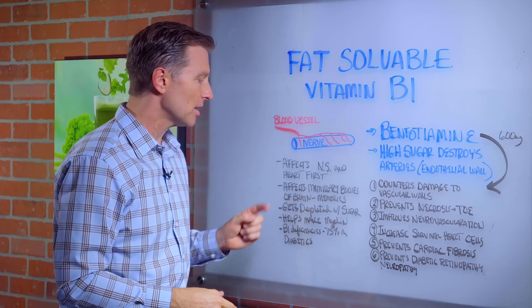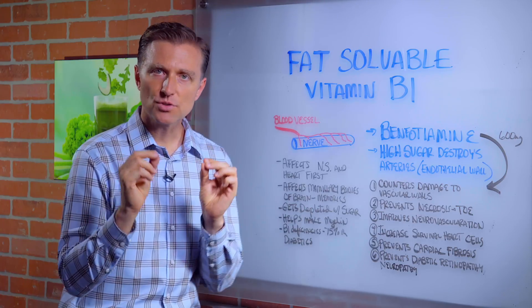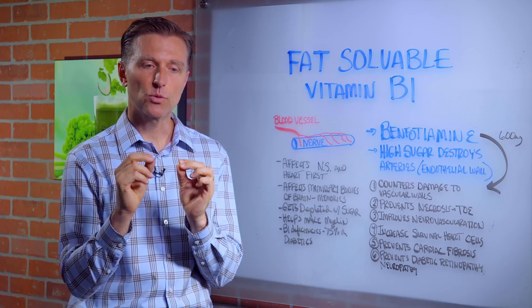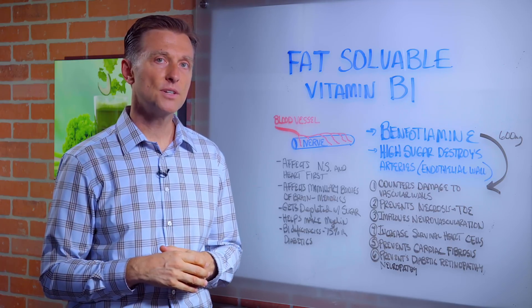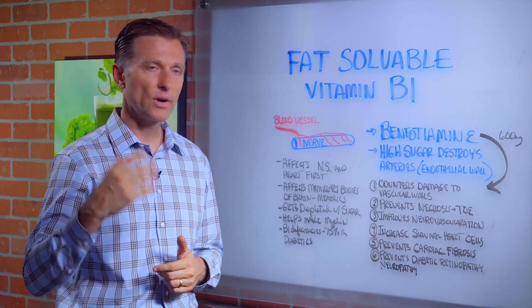It also affects the mammillary bodies in the brain. There are these little structures in the brain called the mammillary bodies that are like relay switches to your memory system. So that's why when you're vitamin B1 deficient, your memories start going as well.